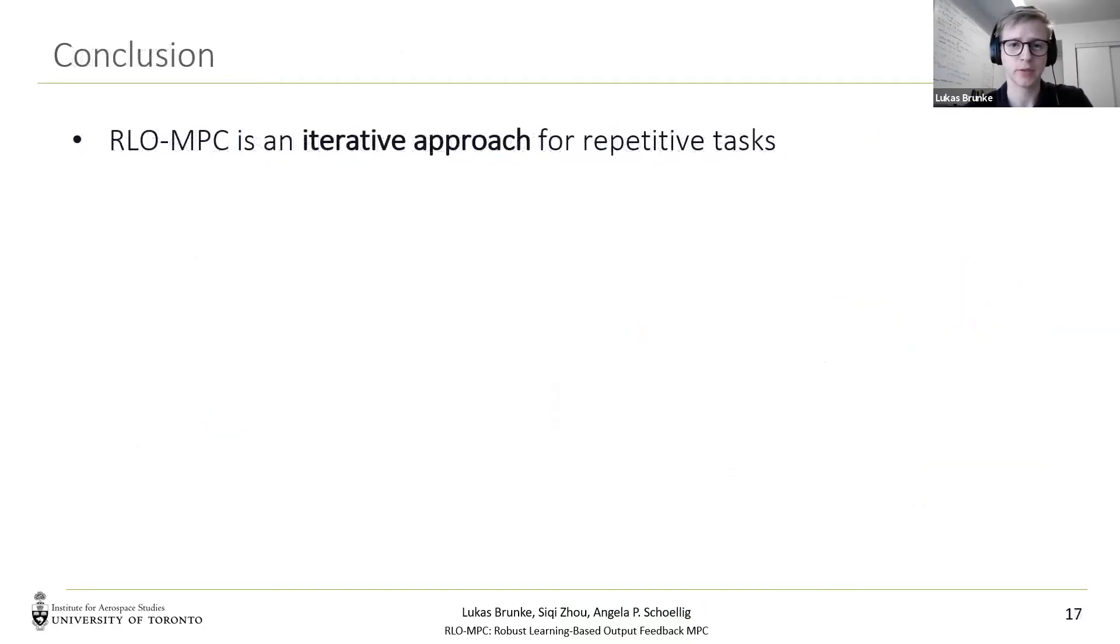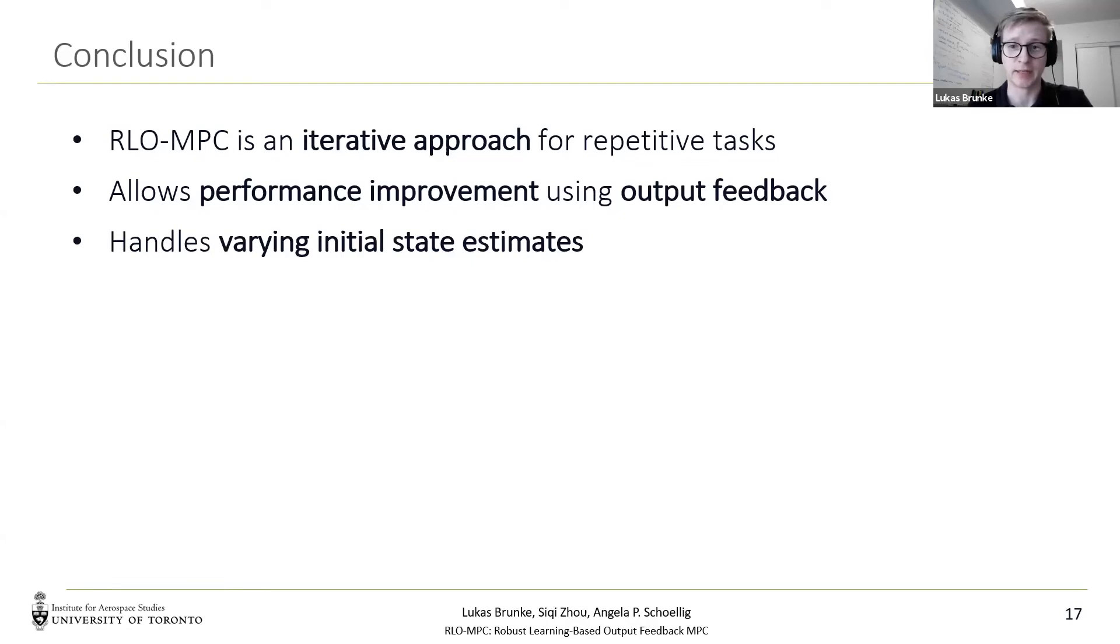To conclude, the RLO MPC is an intuitive approach that can efficiently handle repetitive tasks. It enables performance improvement, even using noisy output feedback. It handles varying initial state estimates, as long as they are inside a predefined compact set. And finally, the worst case duration cost is shown to be monotonically decreasing.